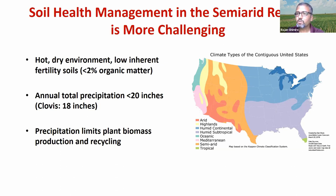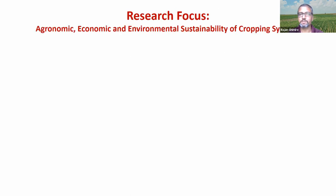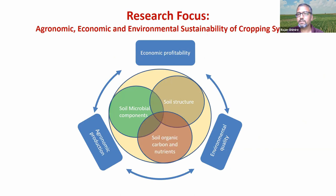When you have less precipitation, biomass production is limited by water availability — for crop, cover crop production, or associated ecosystem services. My research focuses on looking into the microbial component of soil, soil structure, and soil carbon and nutrients.